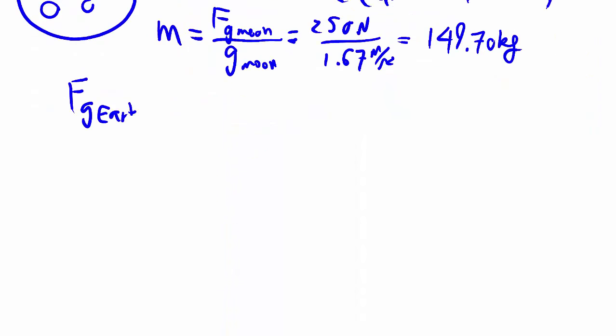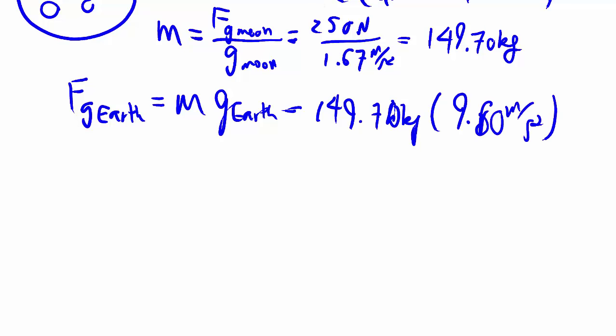And given the mass, the rest of the problem is pretty trivial, because we know very well that g_Earth is 9.80 meters per second squared. Kilograms times meters per second squared gives us a newton. It gives us that number, and we can round that down to 1.5 times 10^3 newtons.